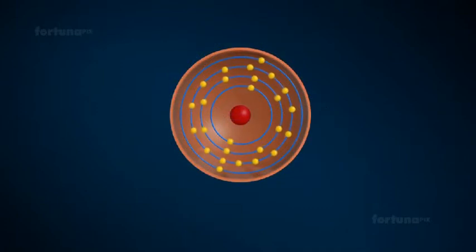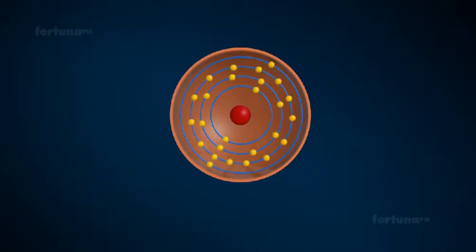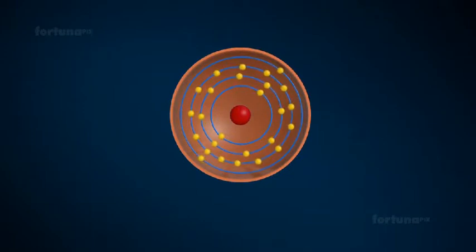Some elements exhibit more than one valency by losing electrons from the shell adjacent to their valency shell.